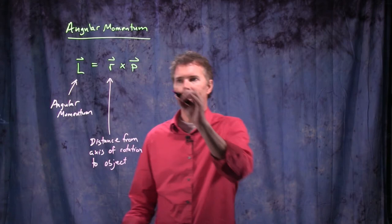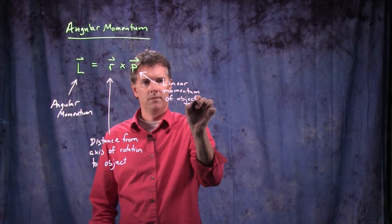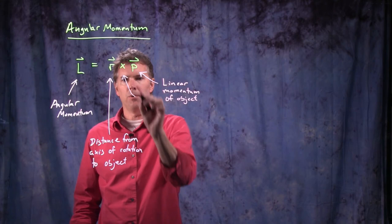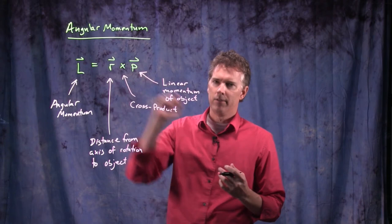p is the linear momentum of that object. What about this funny looking x thing? This is actually called the cross product. And the cross product is a mathematical tool for figuring out how to combine two vectors and still maintain a vector quantity over on the left-hand side.